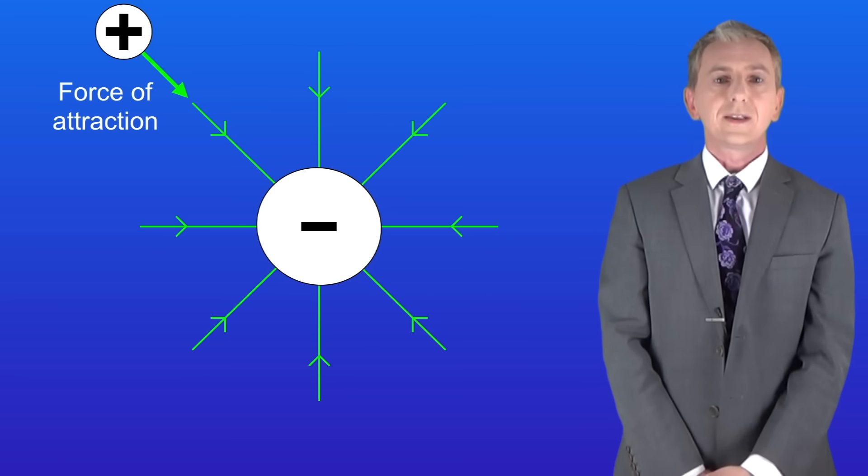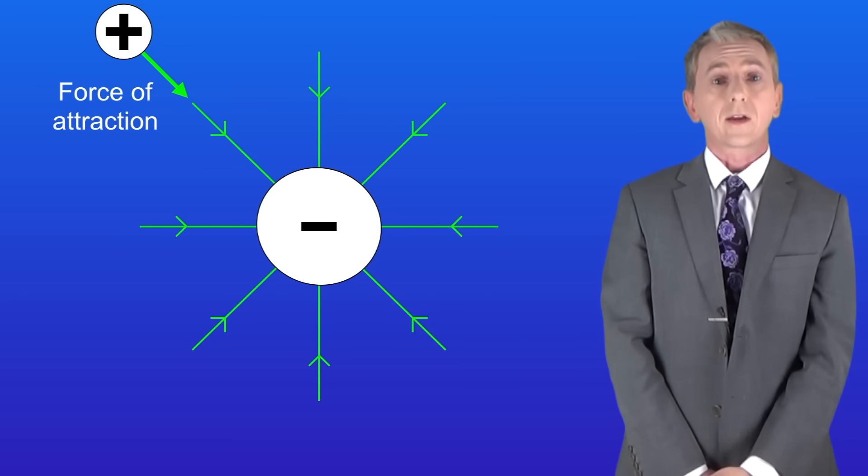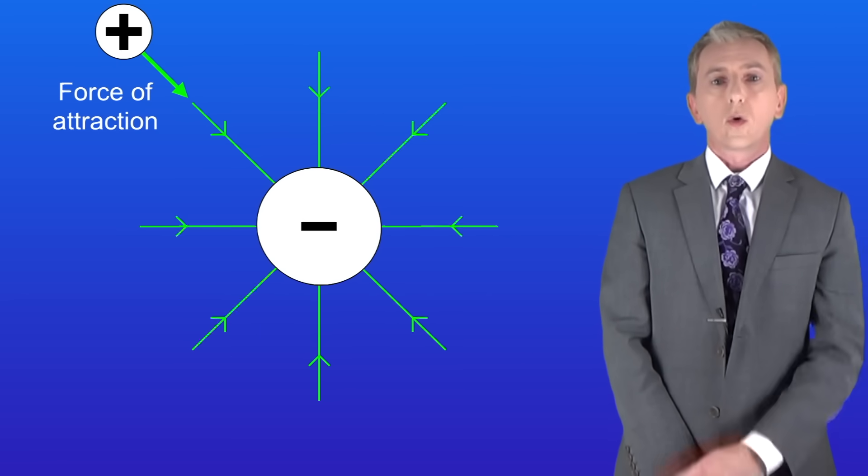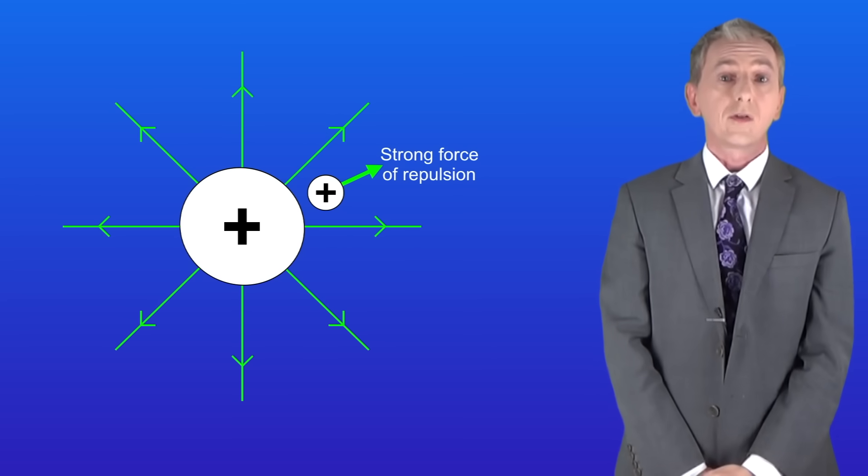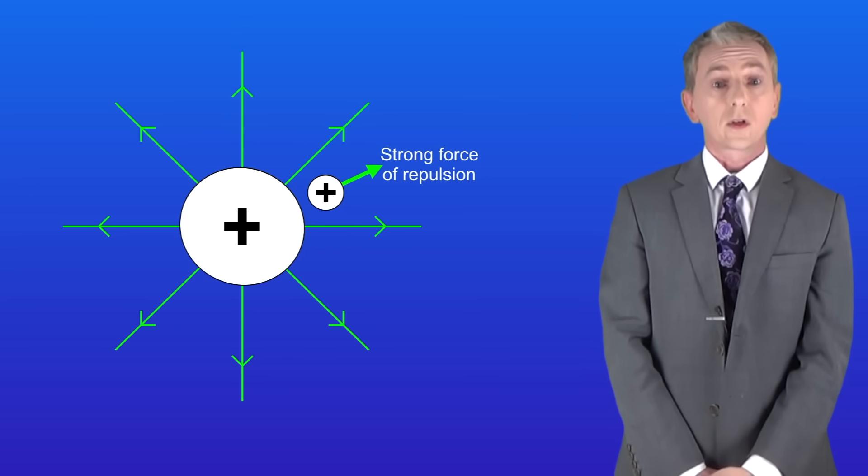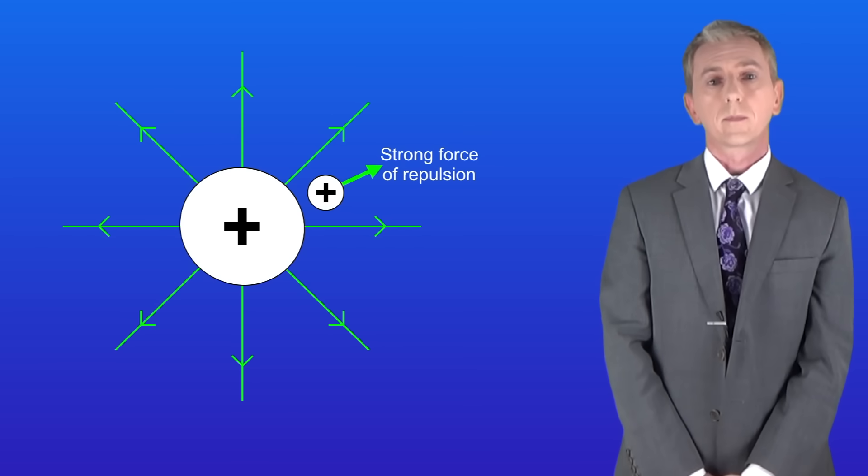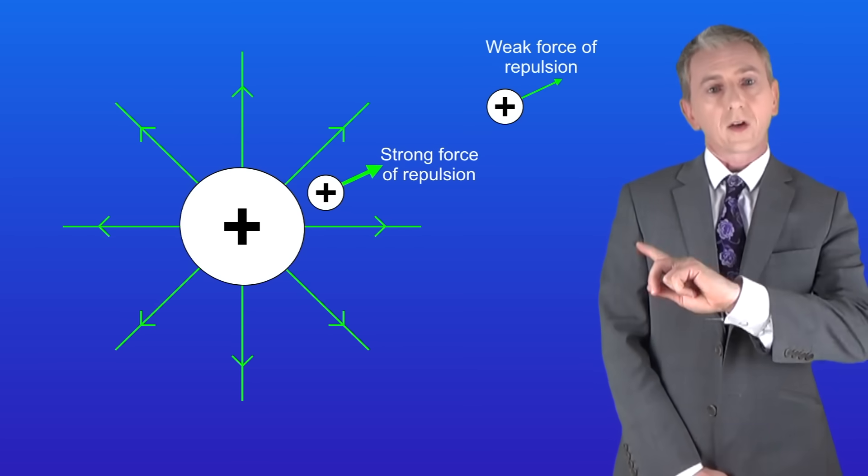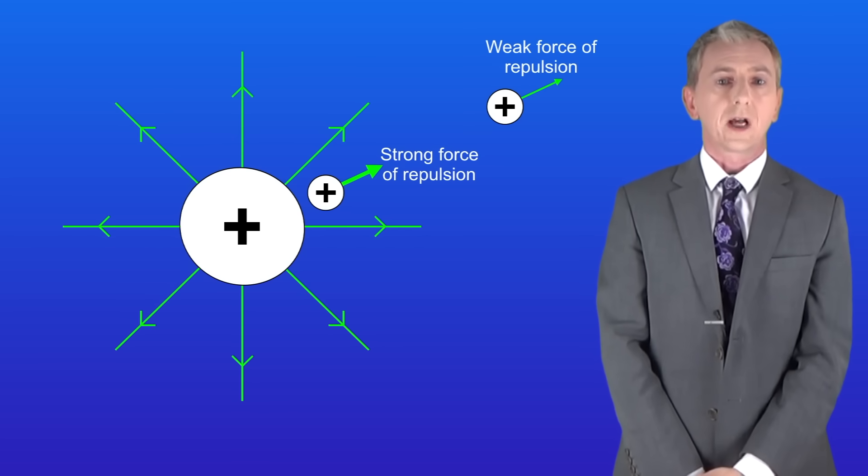Now if we decrease the distance between the objects, then the force gets stronger. So this positive object experiences a strong force of repulsion, and that's because it's close to the central positive charge. However, this object experiences a weaker force of repulsion as it's further away.